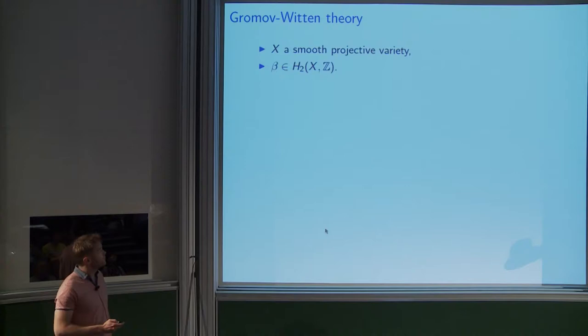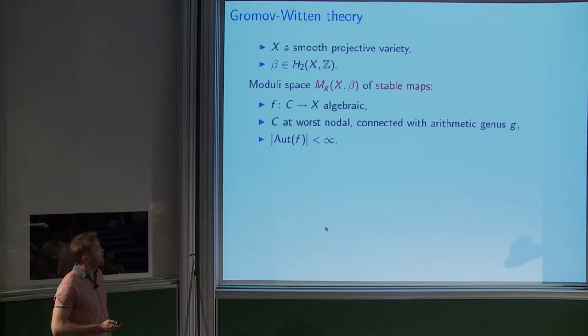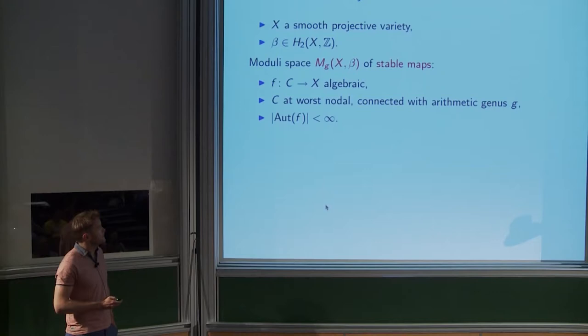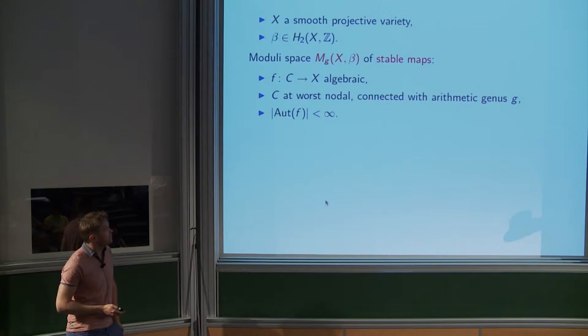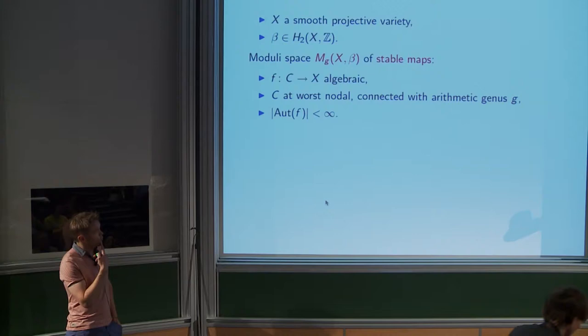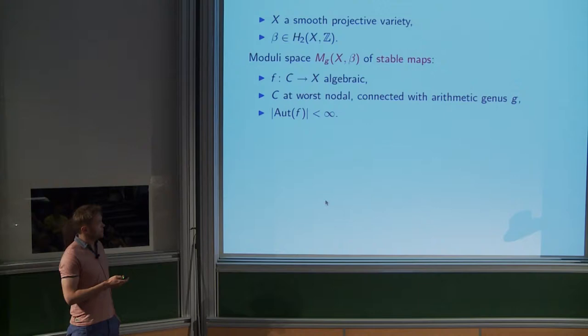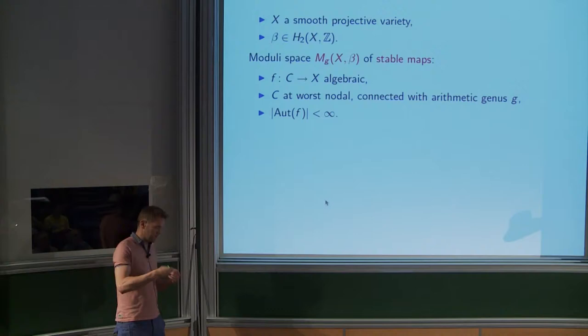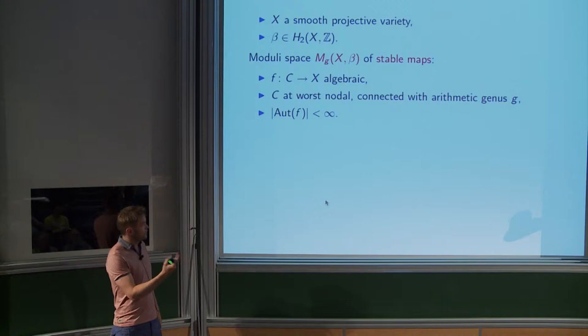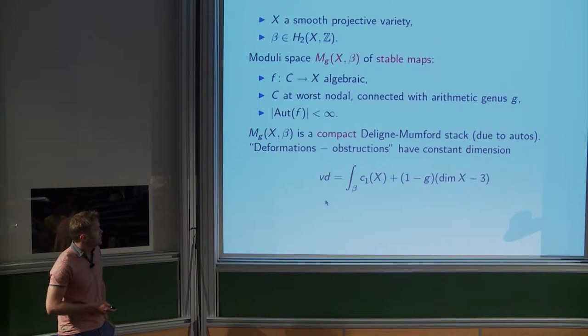Today we deal with all classes and all multiple covers. In Gromov-Witten theory, working with a smooth projective variety and some homology class, there's a moduli space of stable maps — Maxim's moduli space. You take holomorphic or algebraic maps of curves into your variety; the curve is almost smooth, at worst nodal. The one stability condition is that the automorphisms are finite: automorphisms of the curve which commute with the map.